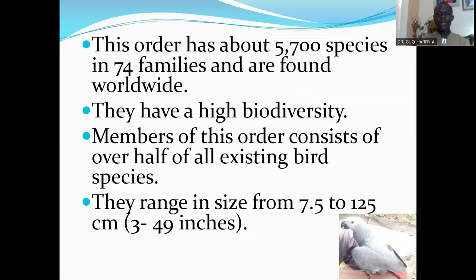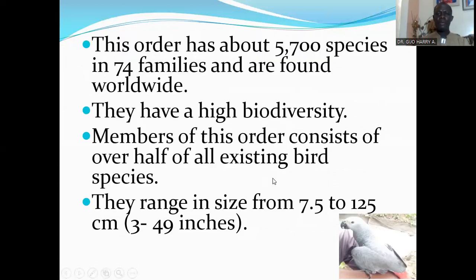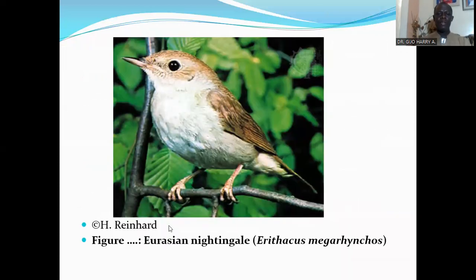The order Passeriformes is found worldwide with high biodiversity. Members of this order consist of over half of all existing bird species, with about 5,700 species in 74 families. They range in size from 7.5 to 125 centimeters, that's 3 to 49 inches. A typical example is the Eurasian starling.